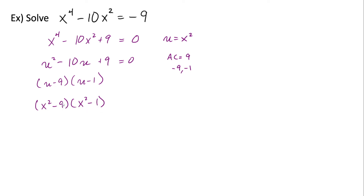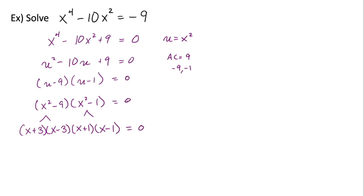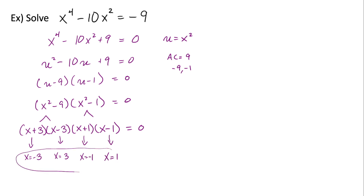Both of these factors can be factored again — they're both differences of perfect squares. Nine and one are both perfect squares. So x squared minus nine factors into x plus three times x minus three, and x squared minus one factors into x plus one times x minus one. Remember this was all equal to zero. Now that we've factored as much as we can, we solve for x. Our four solutions are x equals negative three, x equals positive three, x equals negative one, and x equals positive one.